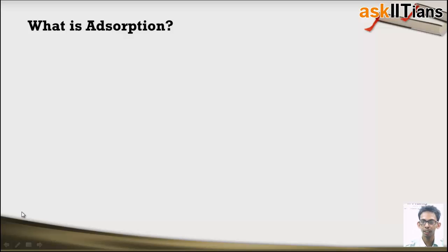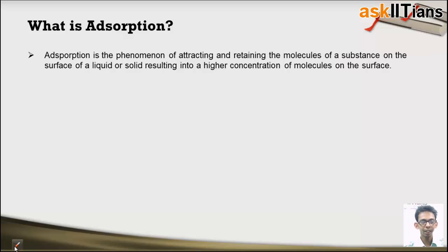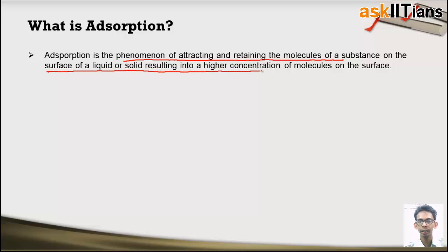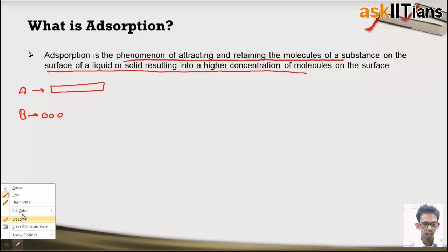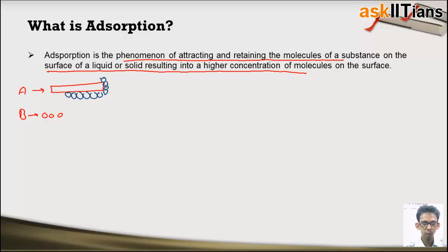Let's find the answer to the first question: what is adsorption? According to the definition, adsorption is the phenomenon of attracting and retaining the molecules of any substance on the surface of a liquid or solid, resulting in a higher concentration of molecules on the surface. For example, if I have substance A and substance B, and the molecules of B are attracted by A and get adsorbed on the surface of A, this process is known as adsorption.